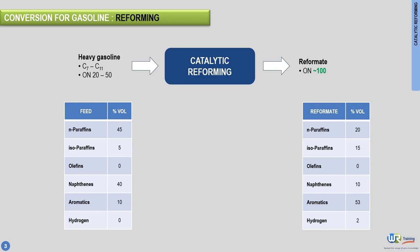You can see now some examples of chemical reactions occurring in the catalytic reforming process. Cyclohexane, a naphthene, is converted into benzene, an aromatic, with the release of hydrogen. Normal butane, a normal paraffin, is converted into isobutane, an isoparaffin.